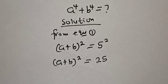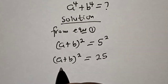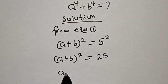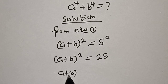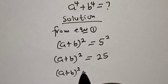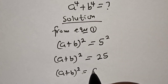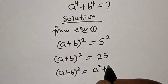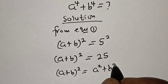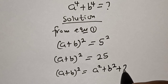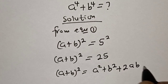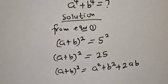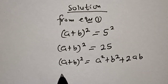Now remember the expansion rule: a plus b squared is equal to a squared plus b squared plus 2ab. Let's substitute using this identity.